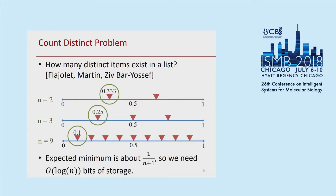Increment the counter for each item you see. Unfortunately, this doesn't work so well when there are many duplicates in the list because they'll get double counted. Instead, computer scientists figured out a more clever way using random hash functions that assign a random real number between zero and one to every item in our domain, then we take only the minimum value. Because we're using a hash function, duplicate items don't get double counted.